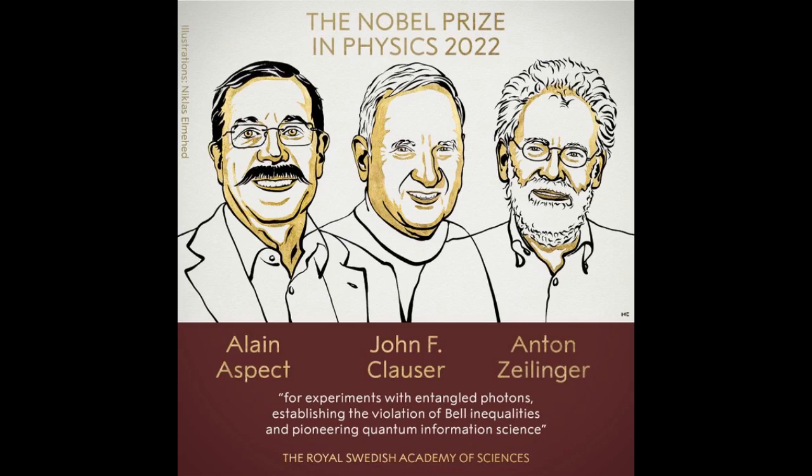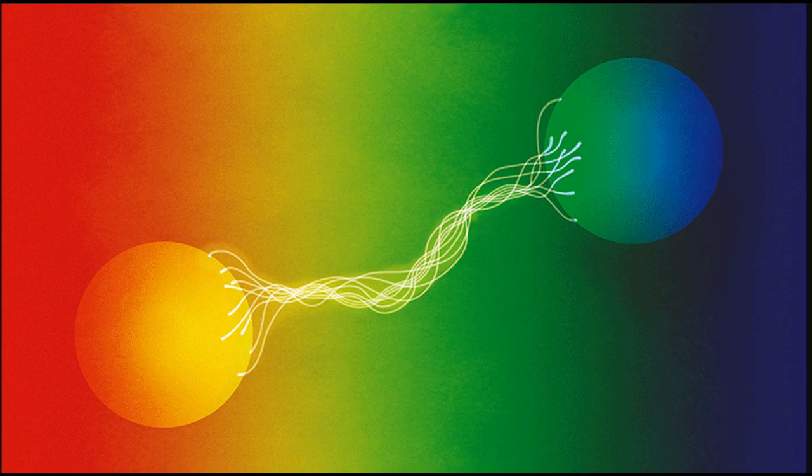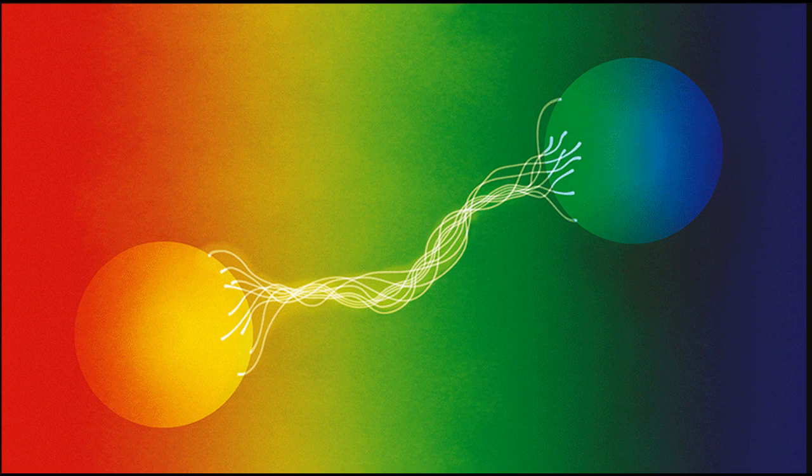establishing the violation of Bell inequalities and pioneering quantum information science. Using groundbreaking experiments, Alan Aspect, John F. Clauser, and Anton Zeilinger have demonstrated the potential to investigate and control particles that are in entangled states. What happens to one particle in an entangled pair determines what happens to the other, even if they are really too far apart to affect each other. The laureates' development of experimental tools has laid the foundation for a new era of quantum technology.